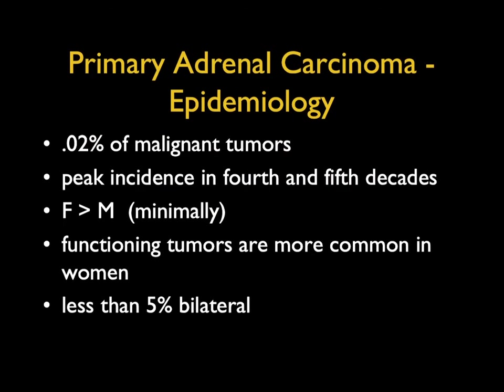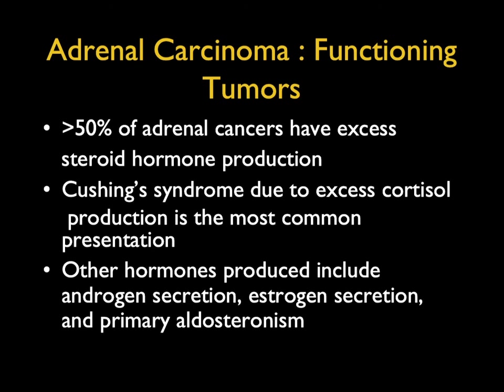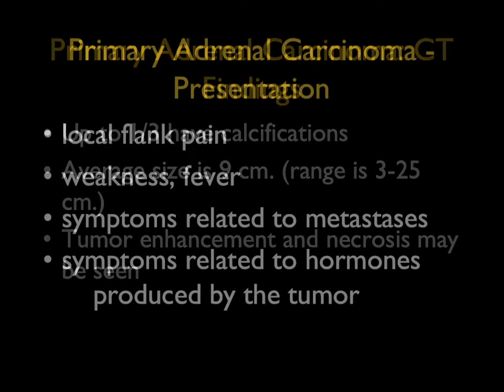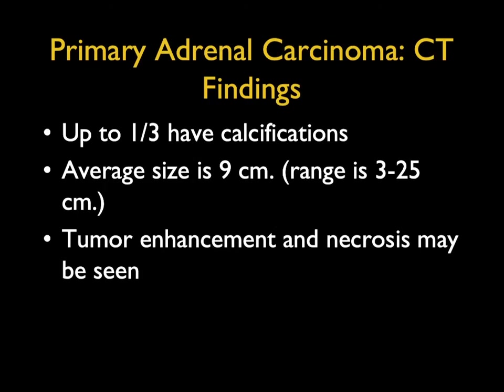Primary adrenal carcinoma: it's a rare tumor occurring in the fourth and fifth decades, more common in women. Functioning tumors are more common in women, and it's rarely bilateral. Excess hormonal production most commonly manifests as Cushing's syndrome. Non-syndromic patients present with larger tumors, flank pain, or fever. Up to a third have dystrophic calcification; average size is 9 cm, ranging from 3 to 25 cm. Central necrosis and abnormal enhancement are common.